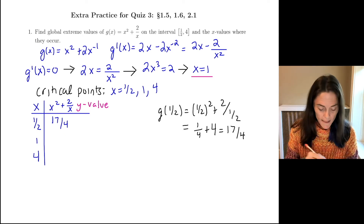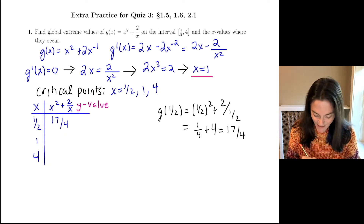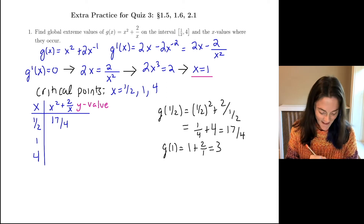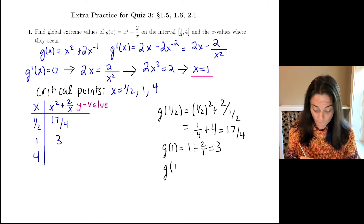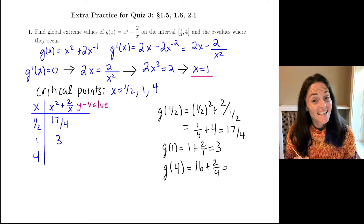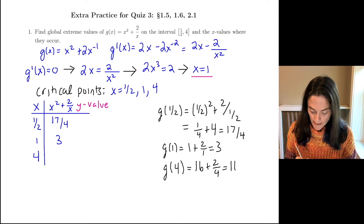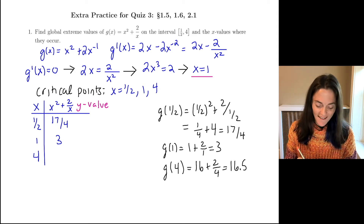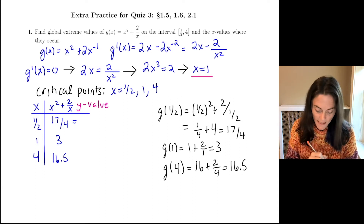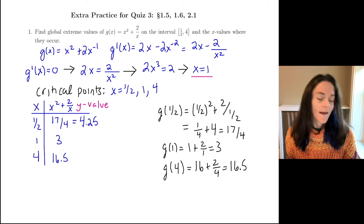Now, g of 1: this is a little easier — g of 1 is 1 plus 2 over 1, which is 3. And then, finally, g of 4: we have 4 squared plus 2 over 4. This is 16 and a half, so I'll just write it as 16.5. And we could have written g(1/2) as a decimal too — it's 4 and a quarter. So that helps.